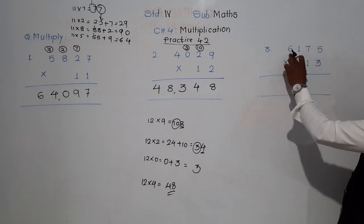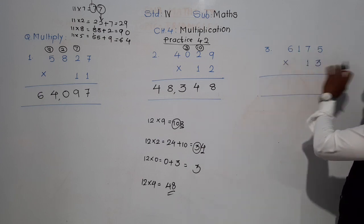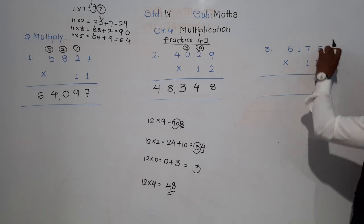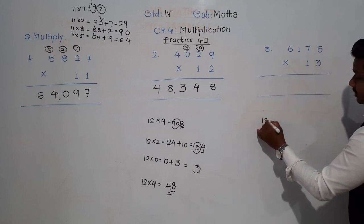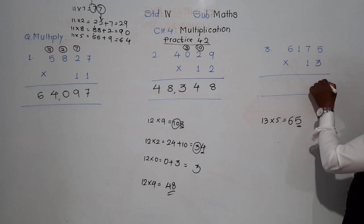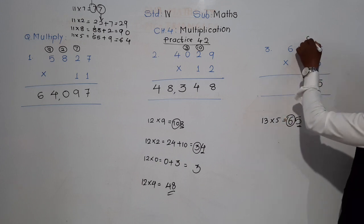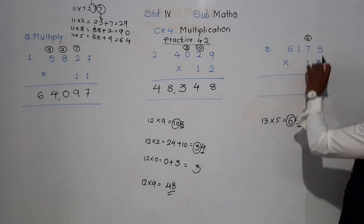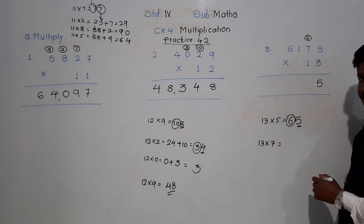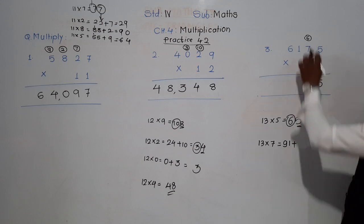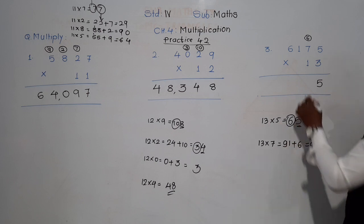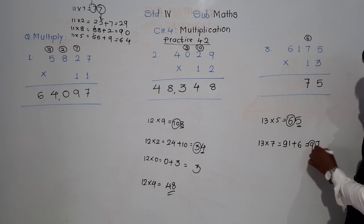Third example: 6,175 into 13. Here we know table of 13. 13 fives are 65, so 5 will come down and 6 will be carried. Then 13 sevens are 91, plus this carry 6: 1 plus 6 is 7 and 9, that's 97. 7 will come down and 9 will be carried.